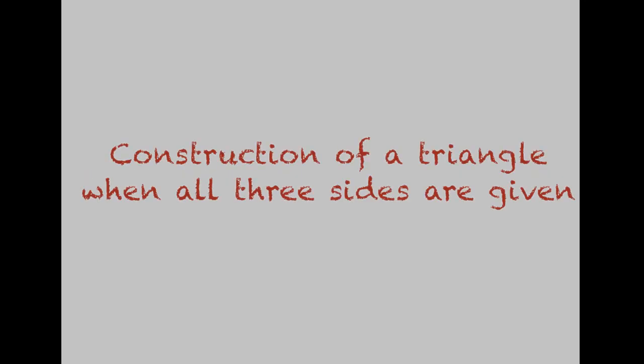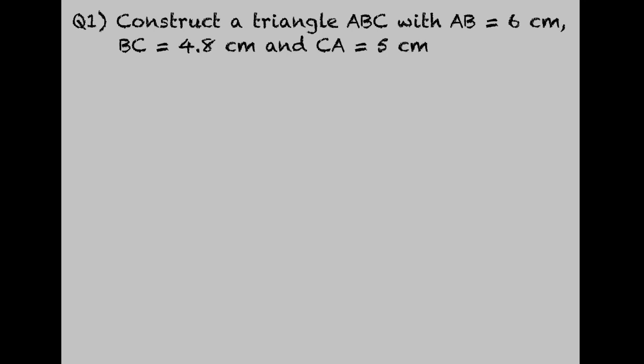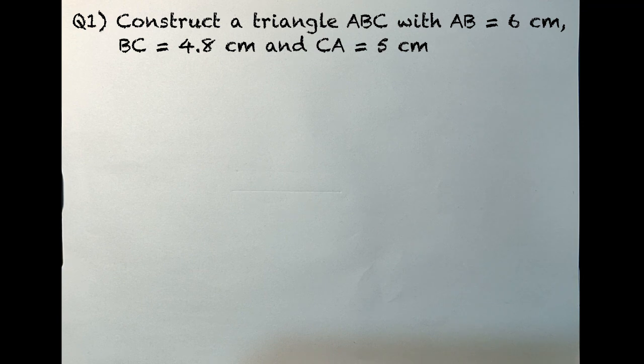Hello and welcome students. Today we will learn about construction of triangles. First, let's begin with construction of a triangle when three sides are given. Construct a triangle ABC with AB equal to 6 centimeters, BC 4.8 centimeters, and CA 5 centimeters.